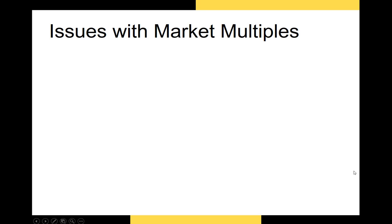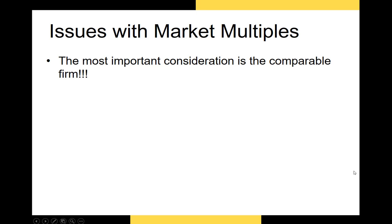There are a lot of issues with market multiples, and I cannot stress this enough: the most important consideration is the comparable firm. If you don't identify an appropriate competitor, your intrinsic value will be way off. For example, if you're trying to value Coca-Cola using Macy's as your comparable firm, the intrinsic value will be worthless — you'd need to use Pepsi. If you don't have a comparable firm to use, you might as well just scrap this entire process.